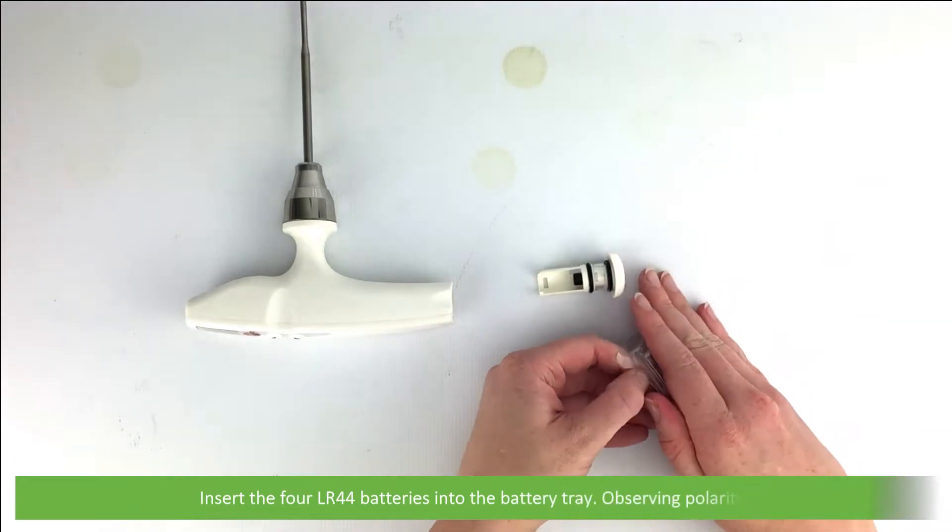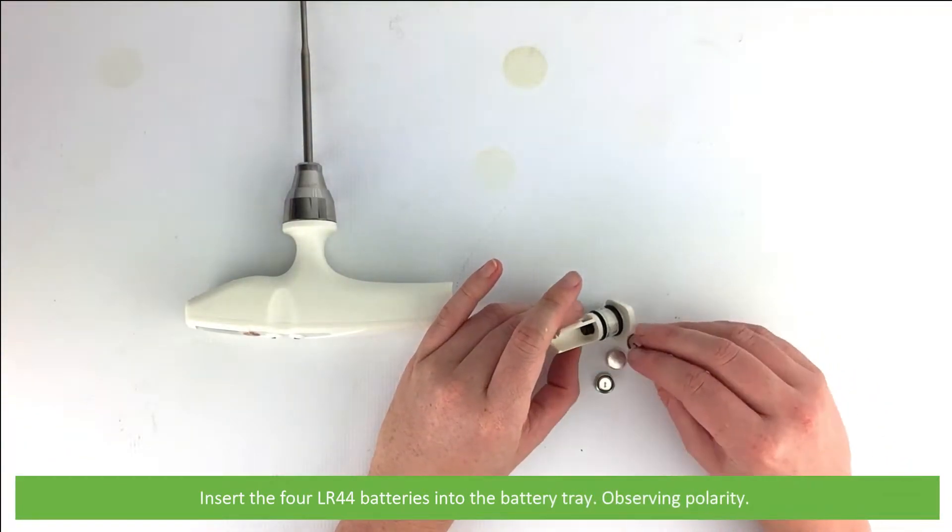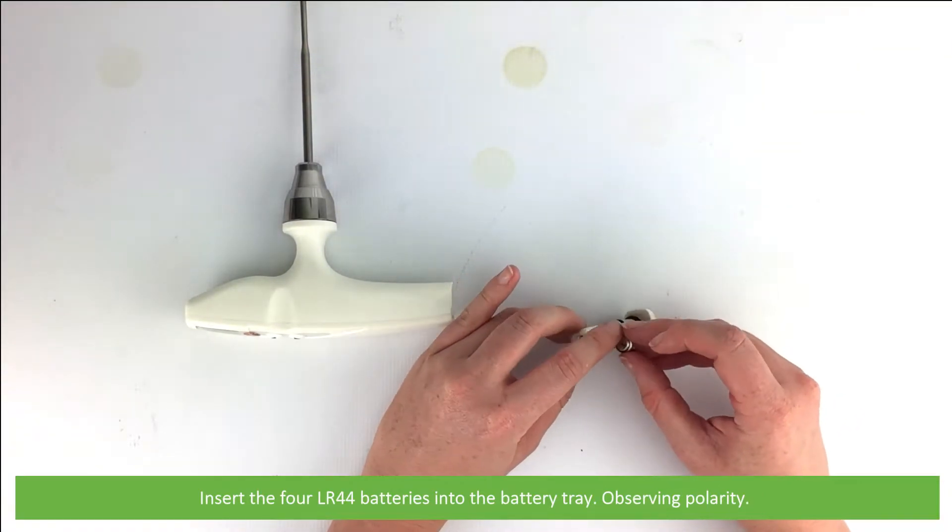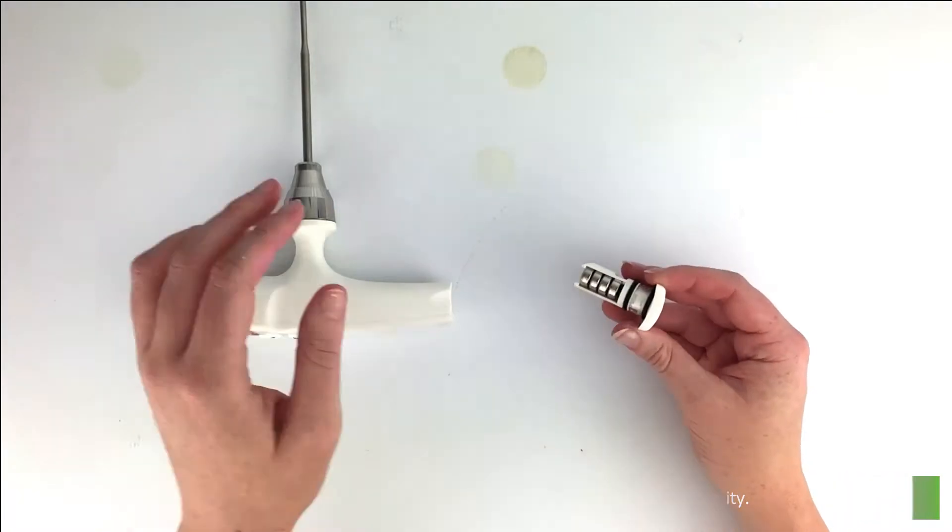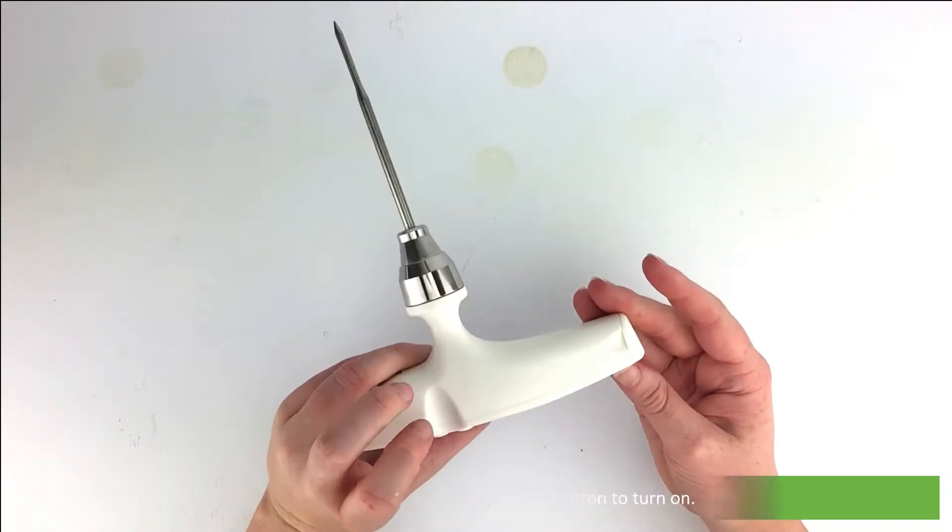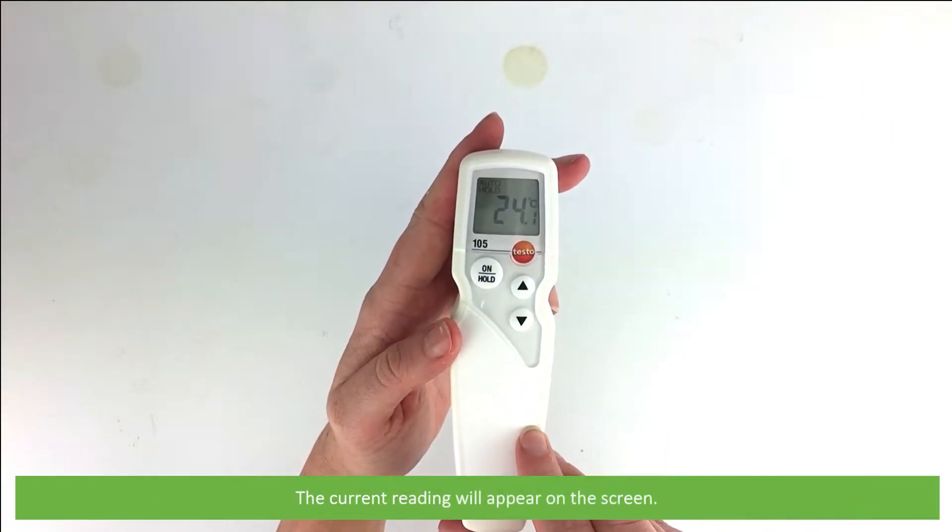Insert the four LR44 batteries into the battery tray, observing their polarity, then reinsert the tray and press the power button to turn on. The current reading will appear on the screen.